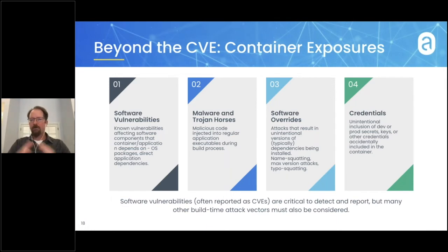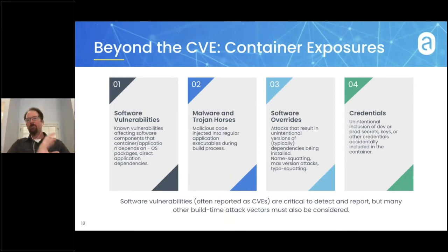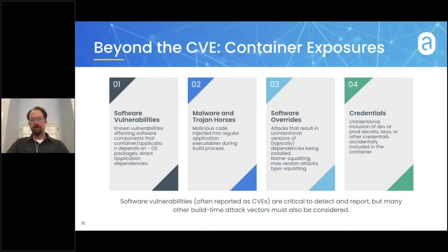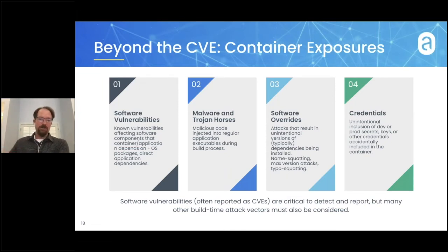The third category is software overrides — a more subtle attack. These typically happen somewhere between when you have your source code and when it's being combined into something executable. A typical example is typosquatting, which takes advantage of potential human error. For instance, in your application you write down your dependencies and perhaps make a typo — misspelling PostgreSQL by replacing the Q and L in their order. An attacker might publish a malicious version of PostgreSQL with those letters intentionally replaced, and when building, you'll pull in the attacker's version rather than the intended one.